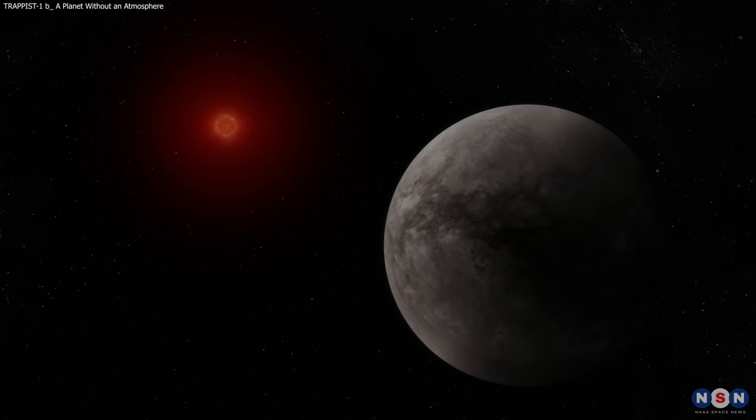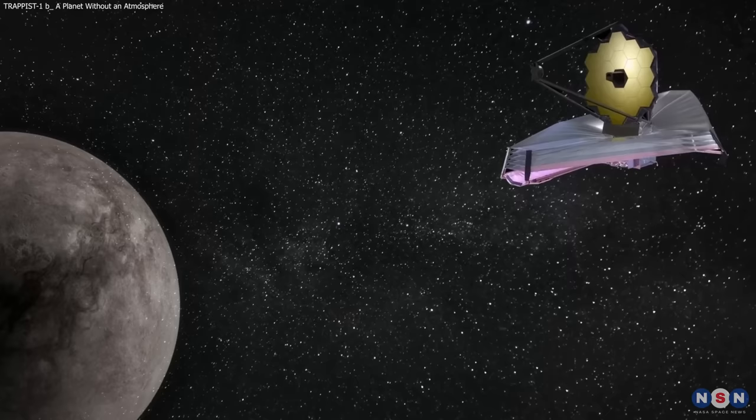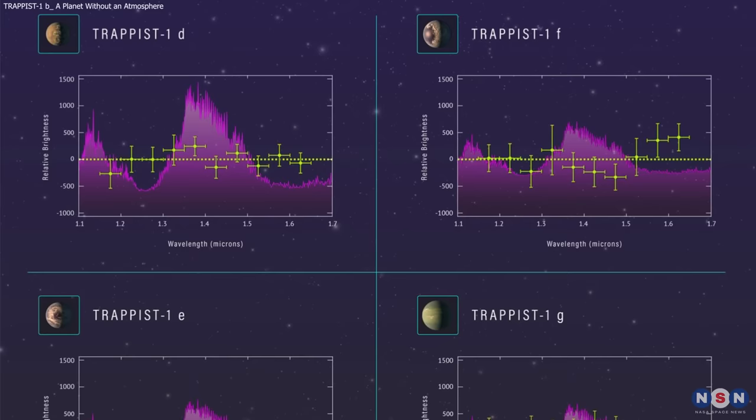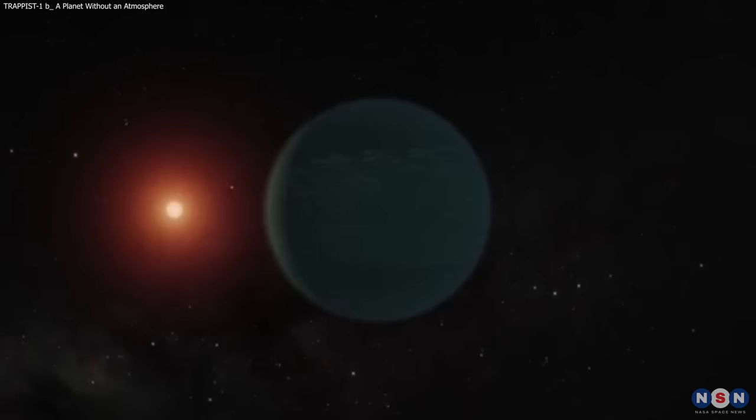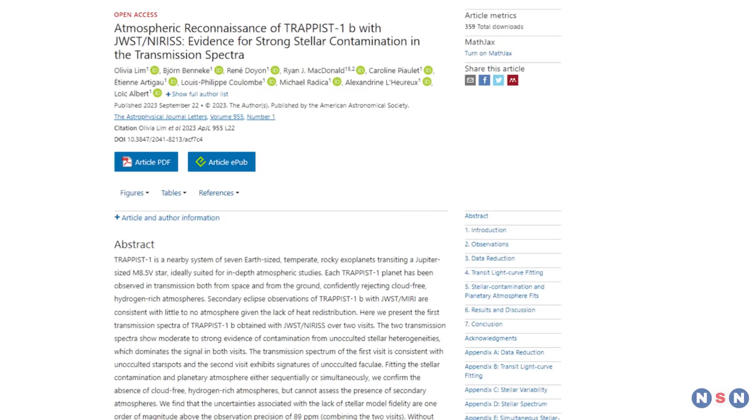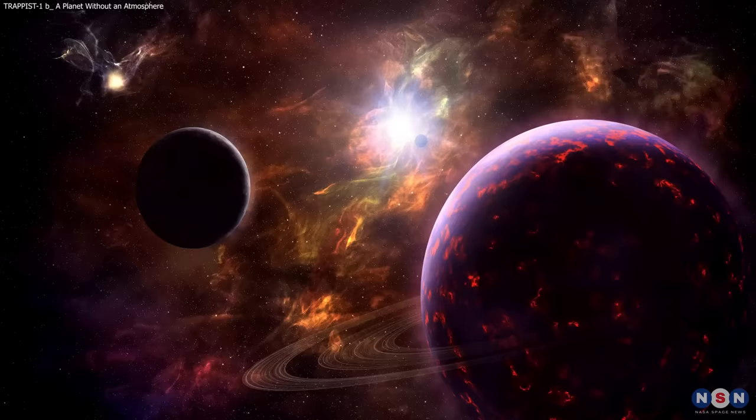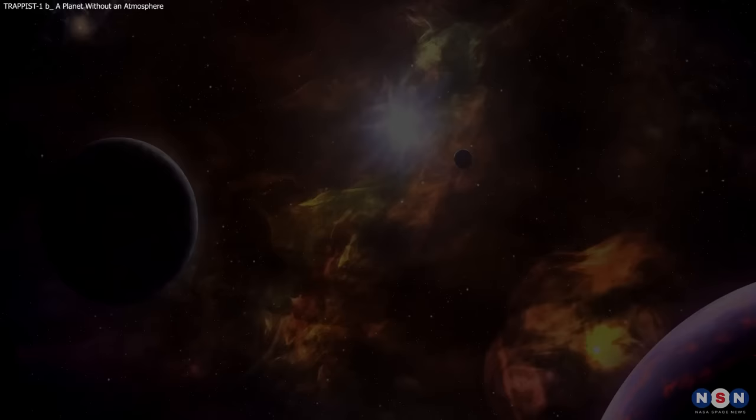We have reached the end of this video, where we have explored the mystery of TRAPPIST-1b. We have learned how a new study used the James Webb to observe this planet in the infrared spectrum and how it found no evidence of any gases or molecules in its atmosphere. We have also learned how this finding contrasts with previous studies that suggested that some of the other planets in the TRAPPIST-1 system may have atmospheres that could support life. We have seen how the star's activity affects the observations of TRAPPIST-1b and how it creates noise and variability in the data. We have discussed the implications and limitations of this study and how future observations could improve our knowledge of exoplanets around low-mass stars.